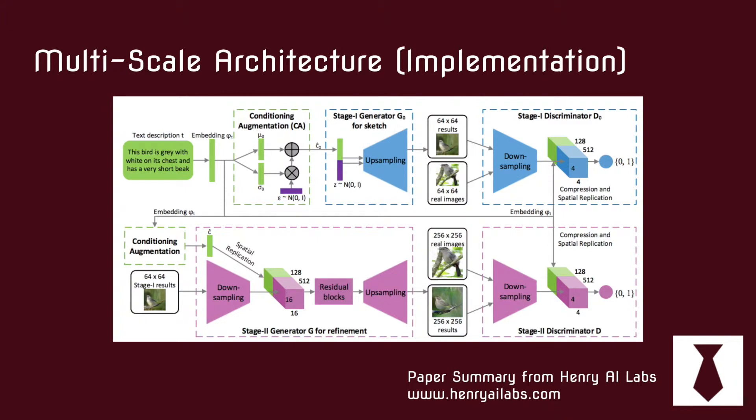It then takes that same 64x64 and uses it to generate the 256x256. Additionally, there is the stage 2 generator, which is a little more advanced than stage 1 — it has things like residual blocks.